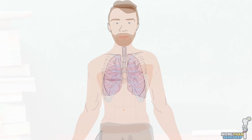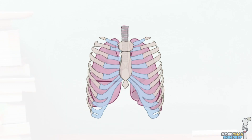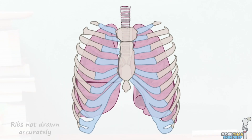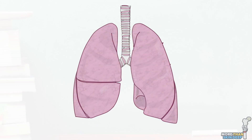The lungs are the large organs of respiration that take up most of your thorax. They are paired and structurally similar to one another. Today we'll look at the gross anatomy of the lungs. In previous videos we covered the anatomy of the tracheobronchial tree and the hilum of the lungs — you might want to check them out too.